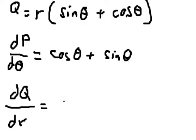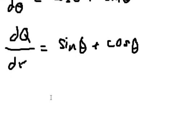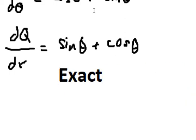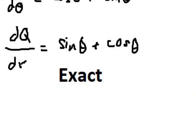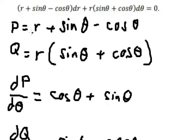We get sin(θ) plus cos(θ), which equals the previous result. So this equation is exact. Now I will set up the function F, and F with respect to θ equals the integral of P.